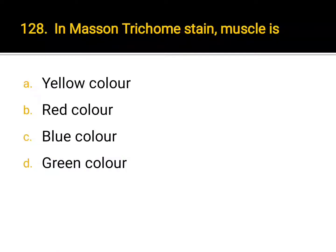In Masson Trichrome stain, muscle is: A. blue color, B. red color, C. blue color, D. green color. Correct answer: B. Red color.